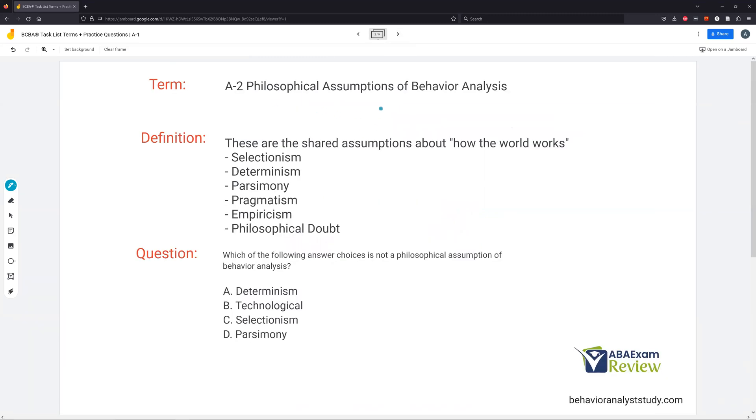So A2, philosophical assumptions of behavior analysis. These are the shared assumptions about how our world works. These govern the world we live in, the world we practice in, and it's going to guide our behavior change procedures. We have to adhere to these assumptions. We're going to cover selectionism, determinism, parsimony, pragmatism, empiricism, and philosophical doubt.